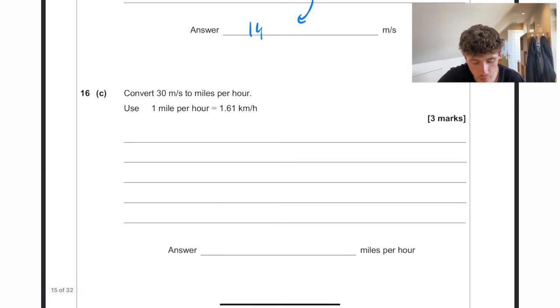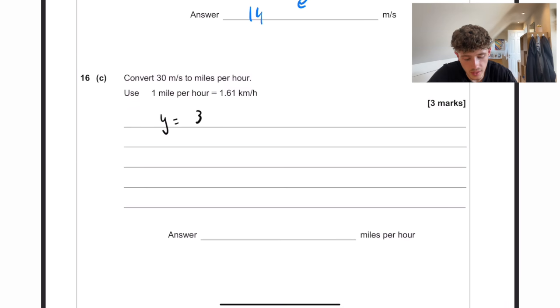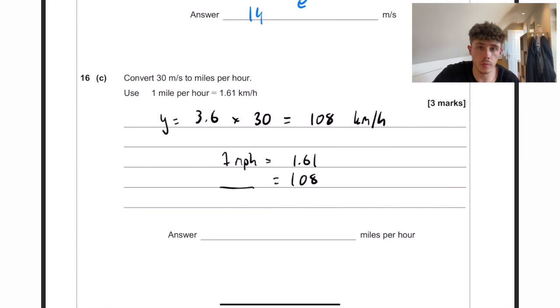Convert 30 metres per second to miles per hour. We know that y is equal to 3.6 times by 30, and that is 108 kilometres per hour. So if we want one mile per hour is equal to 1.61. We know that 108 goes there, and we want to work out that miles per hour there. So what you would want to do here is if you divide 108 by 1.61, you can see what we've timesed by to get from 1.61 to 108, which is 67 point something. And then we times that by the one on the opposite side. So it is just 67.08, for example. So 67.1 miles per hour, let's say.